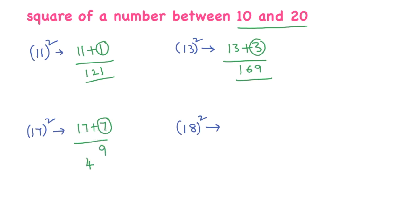17 plus 7 is 24. Now, you add these two numbers. 24 plus 4 is 28, 28 and this 9 is as usual. So, 17 square is 289.